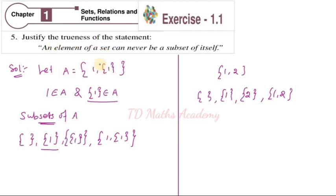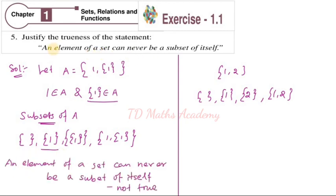One set is an element, and you will see this set — set {1} is an element, and it can also be a subset of itself. So the given statement that an element of a set can never be a subset of itself is not true. We have to write this statement fully and then write 'not true'. That is the answer. That is enough — this is the solution and this sum is over.